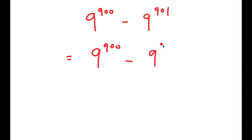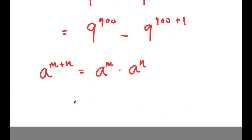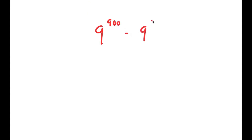I'm going to rewrite 9 to the power of 901 as 9 to the power of 900 plus 1. Now I can use the exponential property: a to the power of m plus n is equal to a to the power of m times a to the power of n. So I get 9 to the power of 900 minus 9 to the power of 900 times 9 to the power of 1.